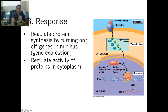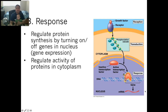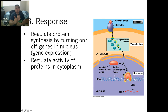The last stage is the response — the cell does something. Once you get the message, it turns on or turns off genes in the nucleus. After transduction, the message goes to a transcription factor, which goes into the DNA and makes new mRNA. It basically makes new instructions for the cell to do something different. That's how cells signal.